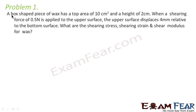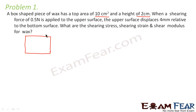Now let us look at the problem. It says a box-shaped piece of wax has a top area of 10 centimeter square and a height of 2 centimeters. We have a box — basically a piece of wax in the shape of a cuboid. The top area is 10 centimeter square and the height is 2 centimeters.